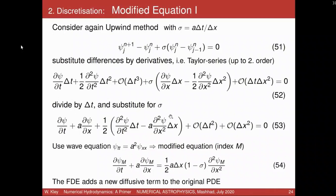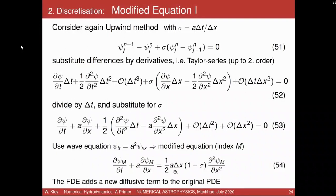We can see that the finite difference equation is equivalent to a partial differential equation which is the original one plus an additional term added by the numerics. That term is a second order spatial derivative — a diffusion part. So the upwind method adds a diffusion property to the original equation, which is exactly what we saw in the numerical solution. The diffusion coefficient is given explicitly, and if you take sigma = 1 (Courant factor one), you get zero diffusion — you would get the analytic solution.